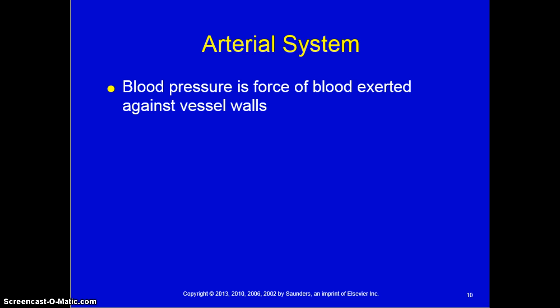When considering the arterial system, its primary function is to deliver oxygen and nutrients to various tissues in the body. Blood pressure is very important and is the force of blood exerted against the vessel walls. A normal blood pressure is about 120 over 80.